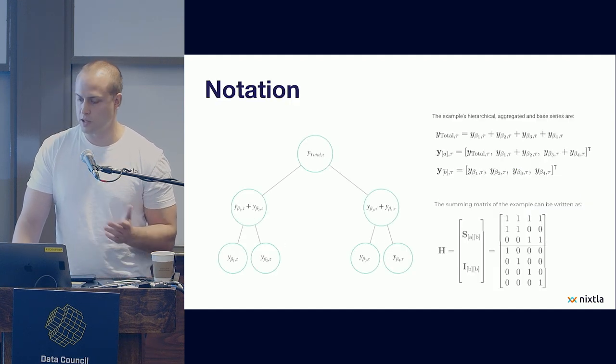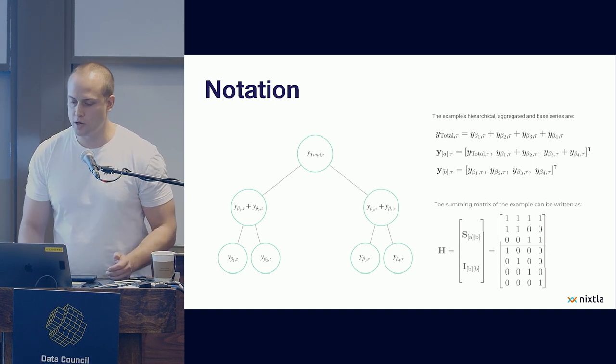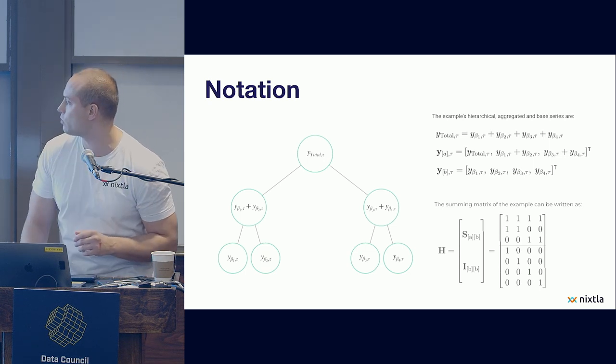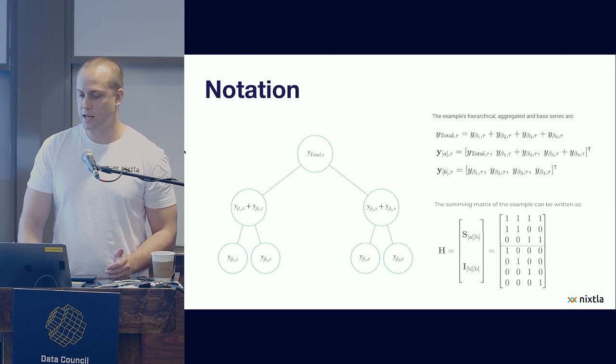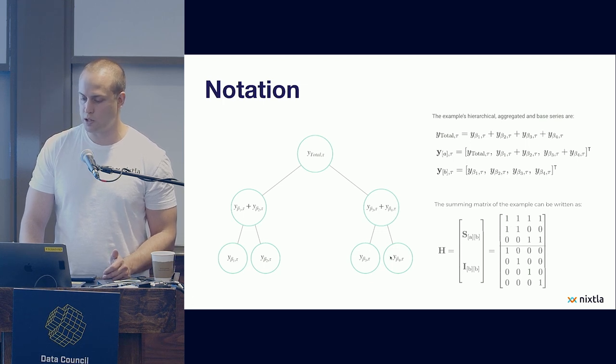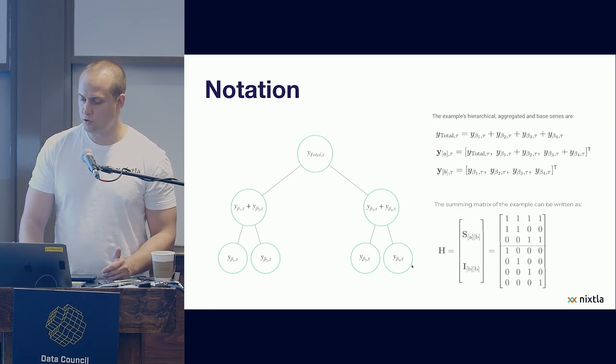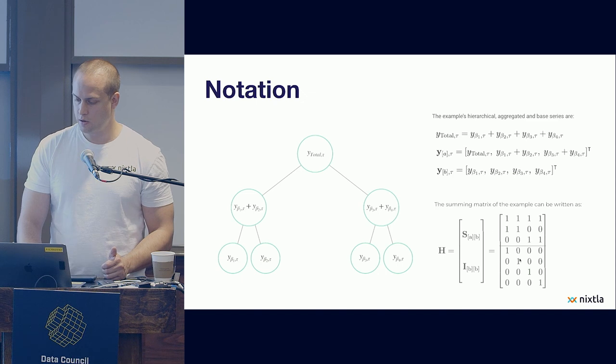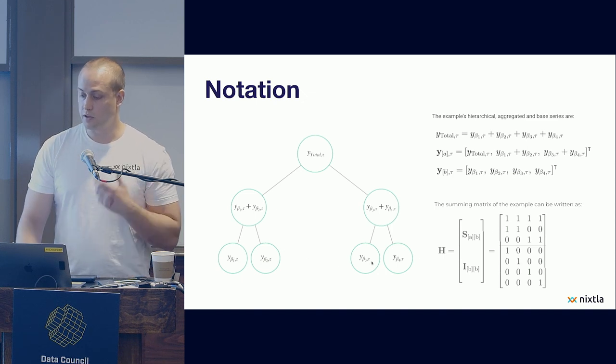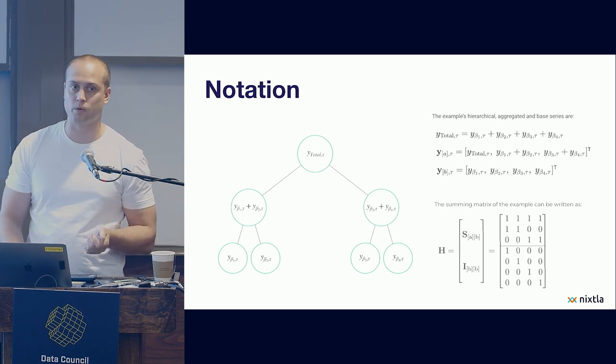And I'm going to introduce some notation. It's not really that important that you follow every single step of the equations. But the intuition here is that you can describe this hierarchical structure by means of matrix notation. So here in this matrix, every row represents a row of the graph. So the first row has all the ones. That means it includes all the different bottom series. Then the second row is an aggregated series. It includes the first two, these ones, the third one, these two. And then you have one particular row for every bottom level. So one here, one here, and so on.